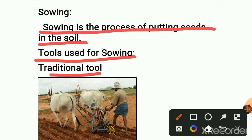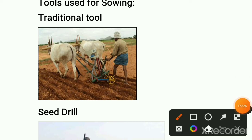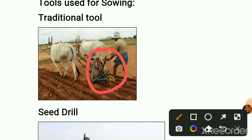Traditional tool: it is funnel-shaped. It is tied to an ox or bull, seeds are put in the funnel, and when the ox or bull starts moving, the funnel-shaped tool drops seeds one by one into the soil — that is sowing. However, this method takes a lot of time and the seeds are not evenly spread; they spread unevenly.